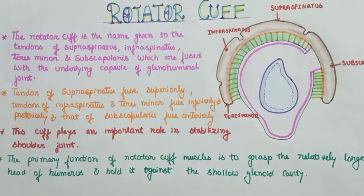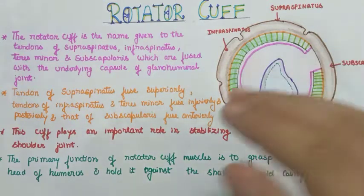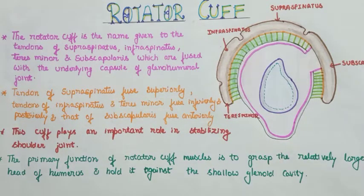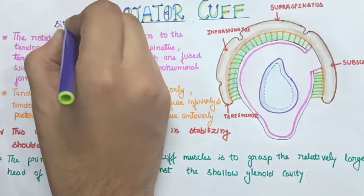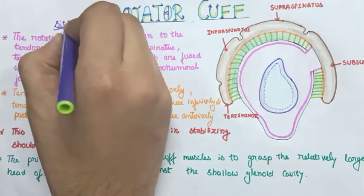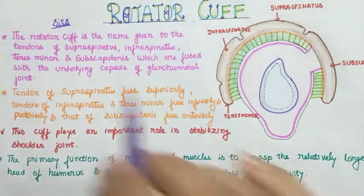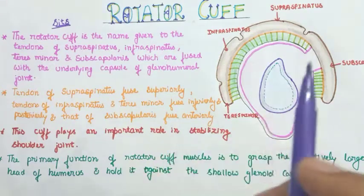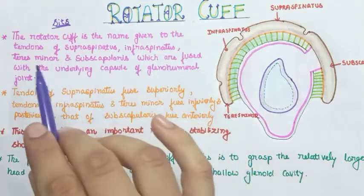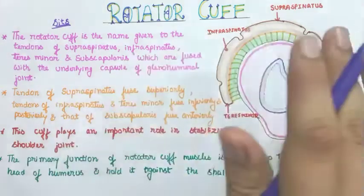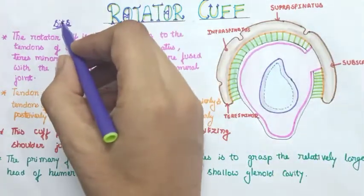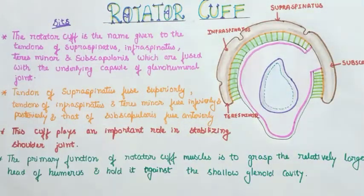The very easy trick to remember the rotator cuff muscles is SITS — S-I-T-S. Always be sure to write SITS in small letters. Why? Because the teres minor muscle is involved, and you will never get confused if you write it in small letters.